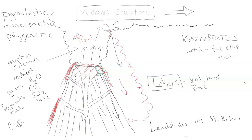As it flows down the slopes, the lahar picks up soil, mud, stones, debris, structures, and trees — anything that humans have built around the volcano is included in this massive flow of water and ice. It's usually a very torrential, high-intensity, high-energy mudflow, flowing down the river valleys and catchment areas and the watersheds, overflowing the existing river banks.